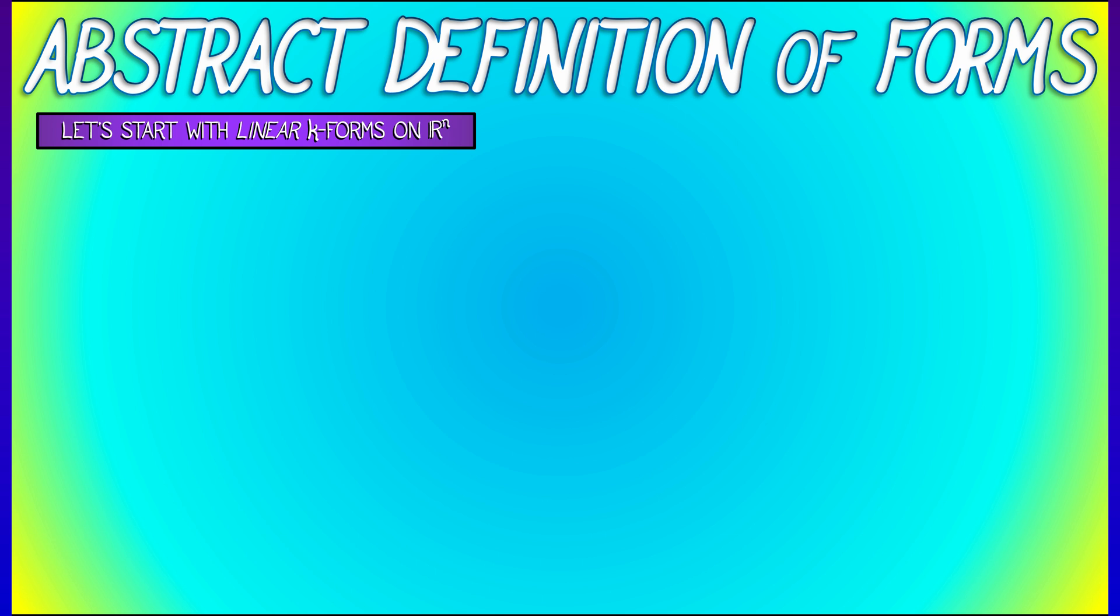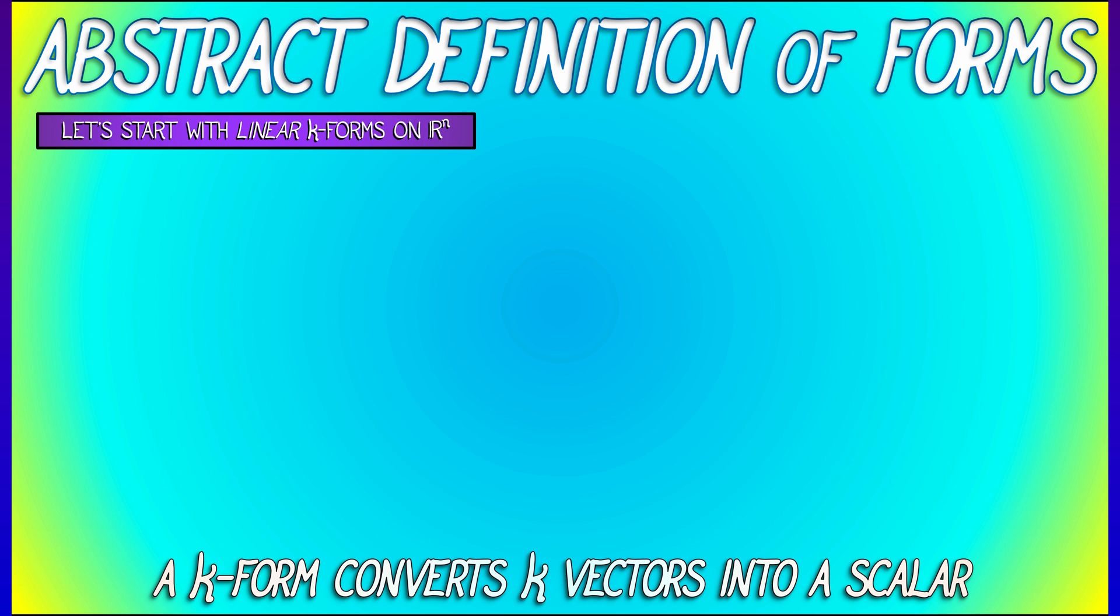A one-form eats a vector, spits out a number. A two-form eats two vectors, spits out a number. A k-form eats k vectors and spits out a scalar.